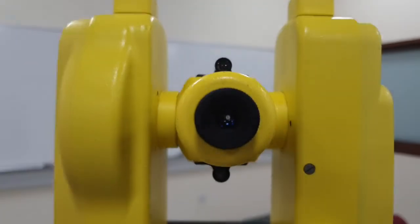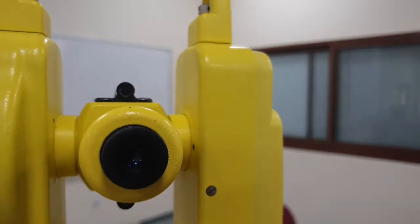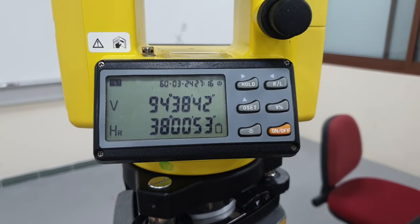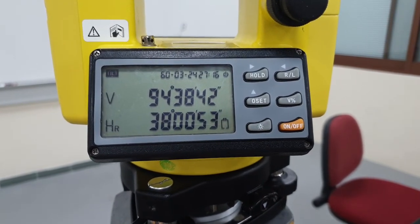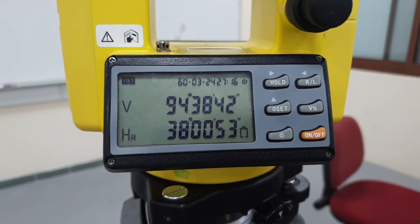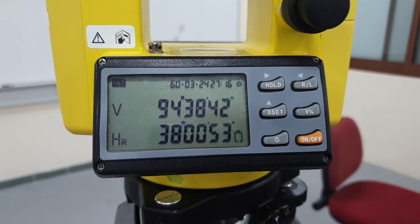You can see the optical sight is centered and the crosshair of the device is centered on the X on the board. So now we take this reading. You'll see the vertical angle has changed and the horizontal angle has changed. The horizontal angle here between the line AOB is 38 degrees, 0 minutes, and 53 seconds.